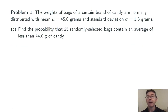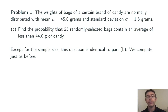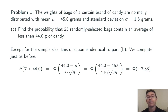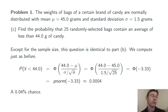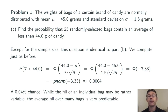Part c: find the probability that 25 randomly selected bags contain an average of less than 44 grams of candy. This is exactly the same as part b except that now we have a larger sample size. We compute phi of 44 minus 45 over 1.5 divided by the square root of 25, which gives us phi of negative 3.33, or p-norm of negative 3.33. In this case we get 0.0004, so there's only about a 4 one-hundredths of a percent chance that 25 bags will have an average this low.